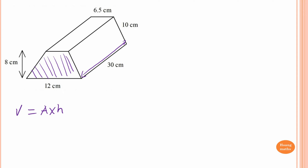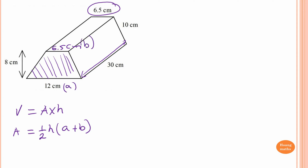So the area of this trapezium here — this is 6.5 centimeters, so this must be 6.5 centimeters as well. The area of a trapezium is a half of height times (A plus B), where A and B are parallel lines — they never meet. So this is A and this is B. You can name them either way; it doesn't really matter because A plus B is the same as B plus A.